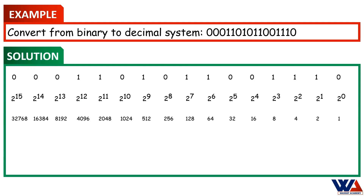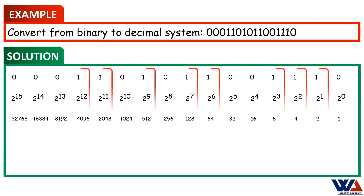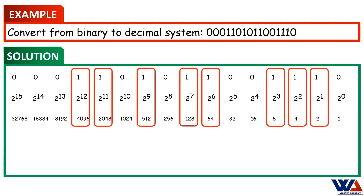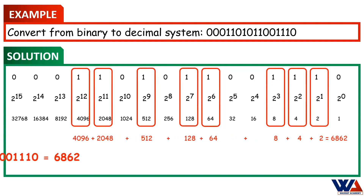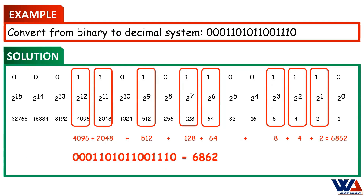In the next step, evaluate each term. The value of 2 to power 0 will be 1, and the value of 2 to power 1 will be 2, and the value of 2 to power 2 will be 4. Continue until the last digit, where the value of 2 to power 15 will be 32,768. Then, select the values of the 1's binary digits and add them to get the decimal value. The decimal value in this example is 6,862.